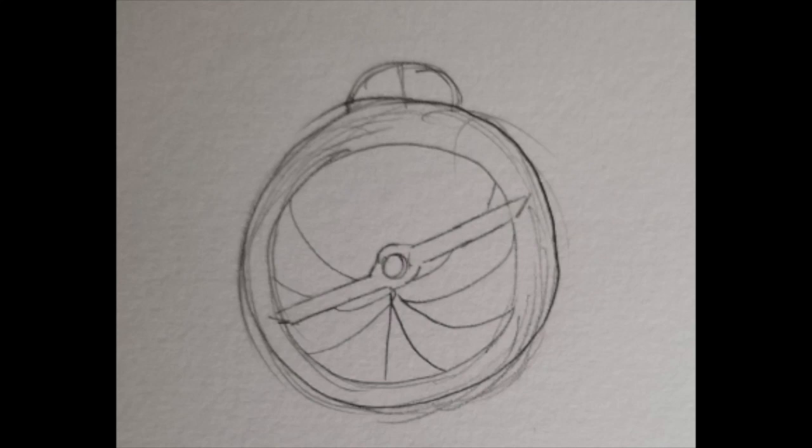This is an astrolabe. Basically, astrolabes are a highly complex astronomical system that is made up of multiple moving parts and symbols and was typically used by middle age astronomers to measure the elevation of specific objects in the sky.